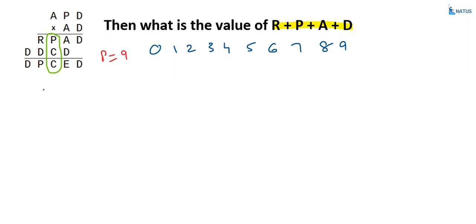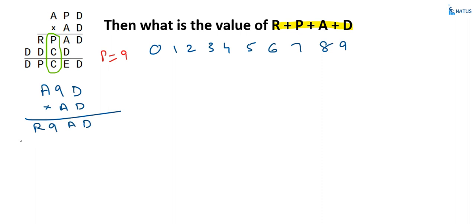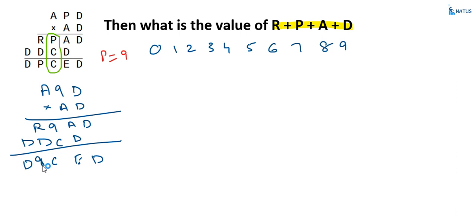With P equal to 9, the number becomes A9D into AD. This is equal to R9AD, and the partial products are D, D, C, D. And the sum is D, E, C, P — that is 9 — and next this is equal to D. Now we will find out the other values.